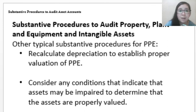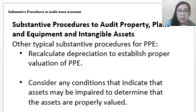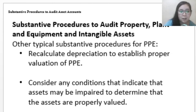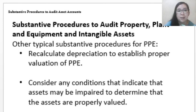Those are the substantive audit procedures. By the way, these substantive procedures can also be applied and performed for intangible assets as well. Those are the different procedures that an auditor can perform in auditing property, plant, and equipment as well as the intangible assets of the entity.